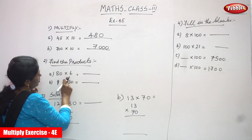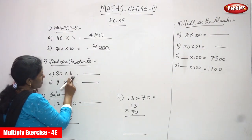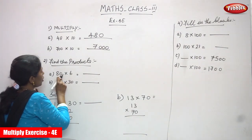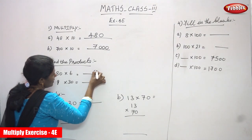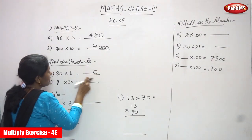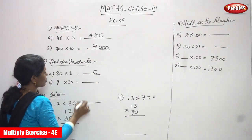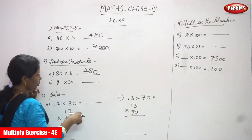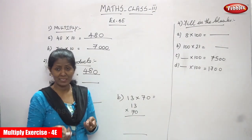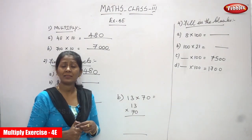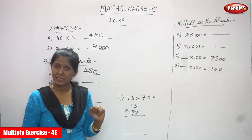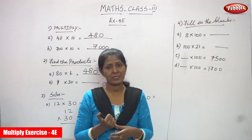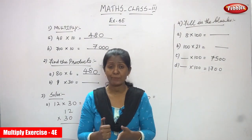Next, find the product: 80 into 60. That means 8 tens and 6 tens. There is only one zero in 80, so first write the zero at the end, then multiply the remaining numbers: 8 into 6 is 48. You can use either the six table or the eight table, whichever is convenient. Using the six table: six ones are 6, six twos are 12, six threes are 18, six fours are 24, six fives are 30, six sixes are 36, six sevens are 42, six eights are 48.